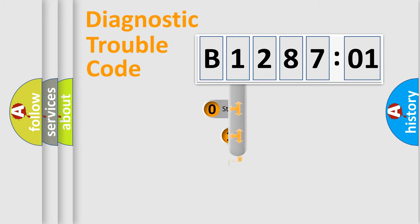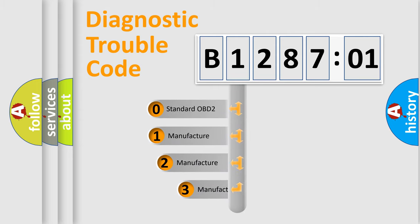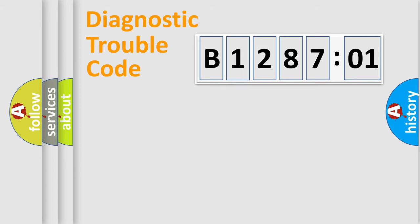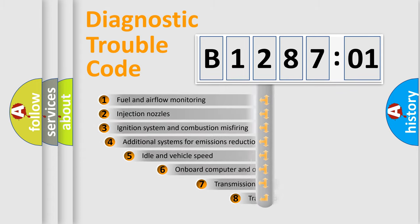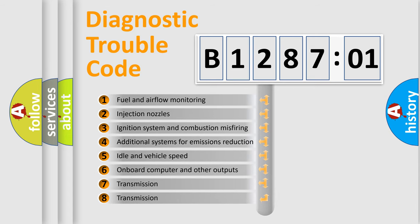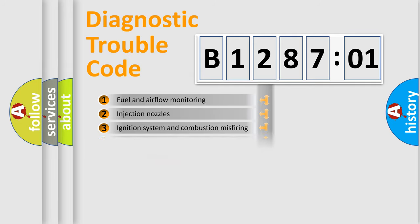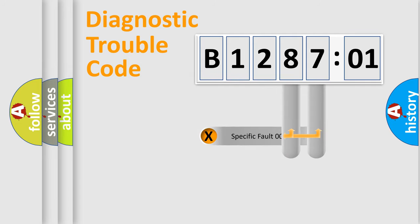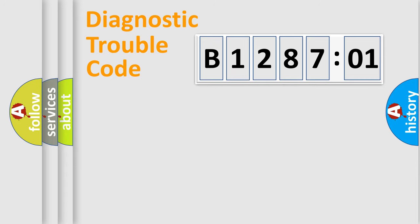This distribution is defined in the first character of the code. If the second character is expressed as zero, it is a standardized error. In the case of numbers 1, 2, or 3, it is a manufacturer-specific error expression. The third character specifies a subset of errors. This distribution is valid only for the standardized DTC code, and only the last two characters define the specific fault within the group.